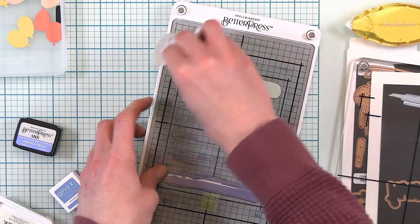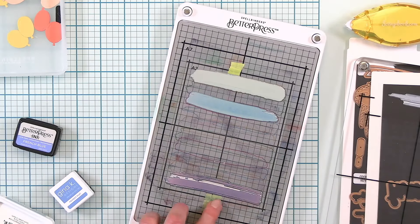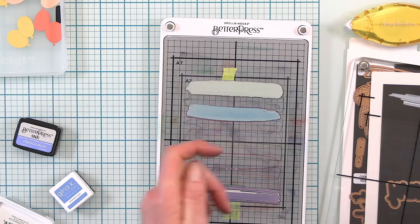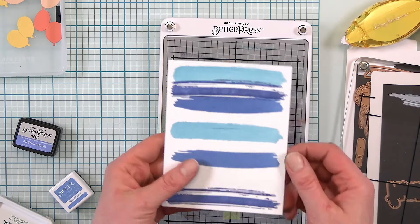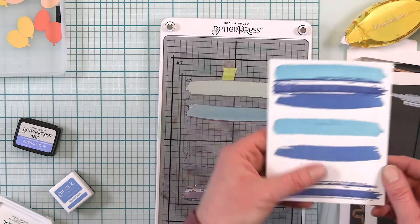Every time I move my plates I wipe down my template just to ensure that I don't have too many ink smudges. Look at how that's turning out.